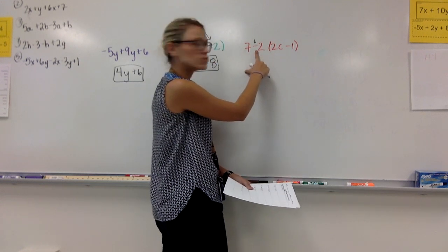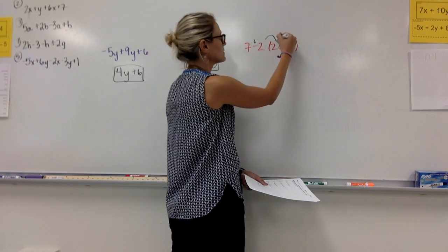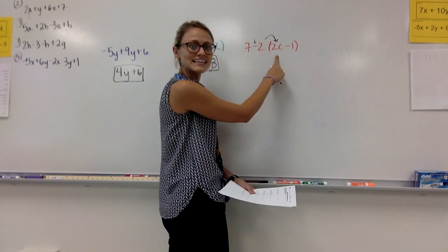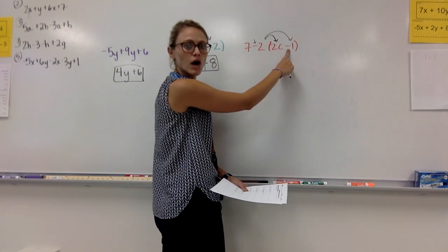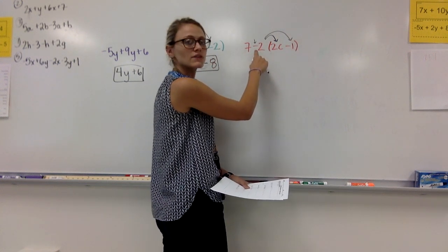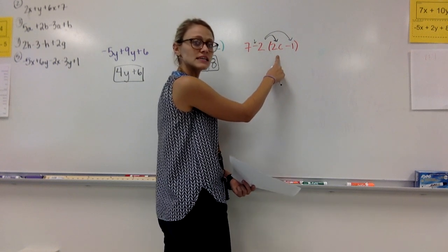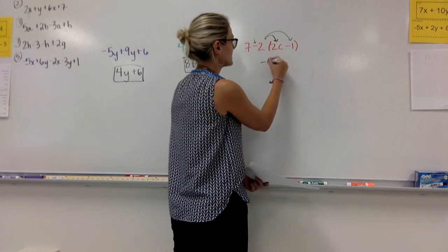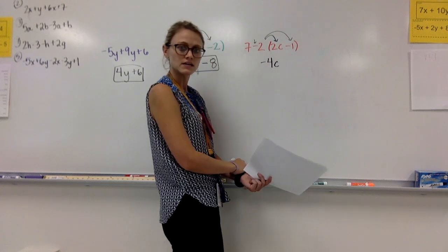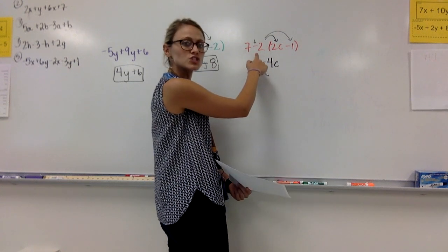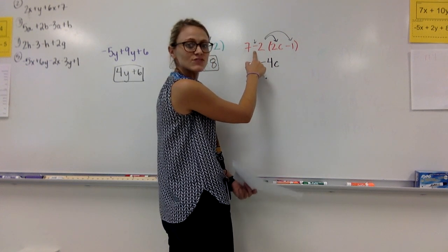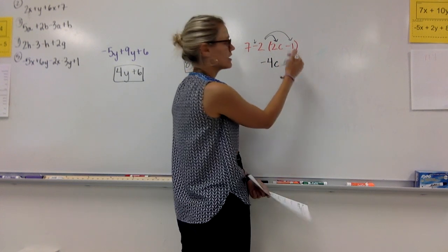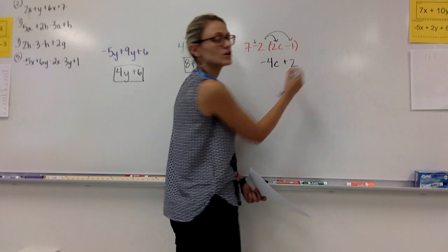we have a -2 being distributed to a 2c and a -1. So -2 times positive 2c is a negative 4c. A -2 times a -1, a negative times a negative makes it a positive 2.